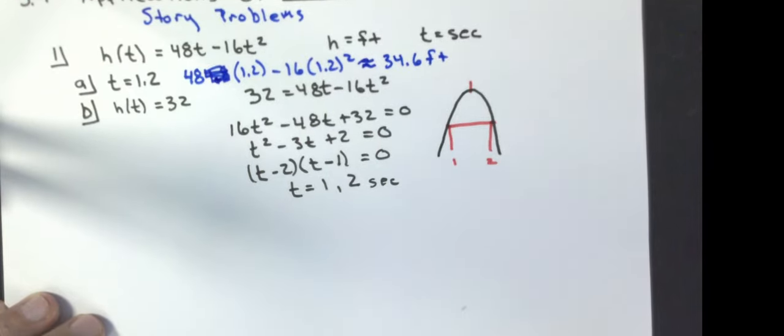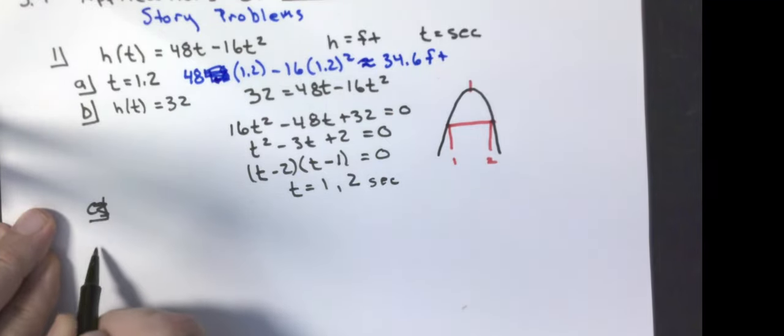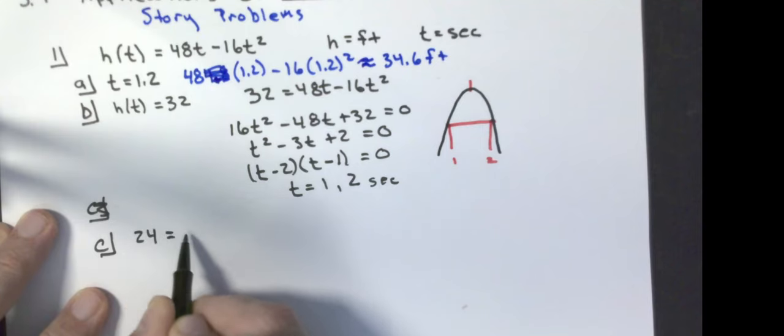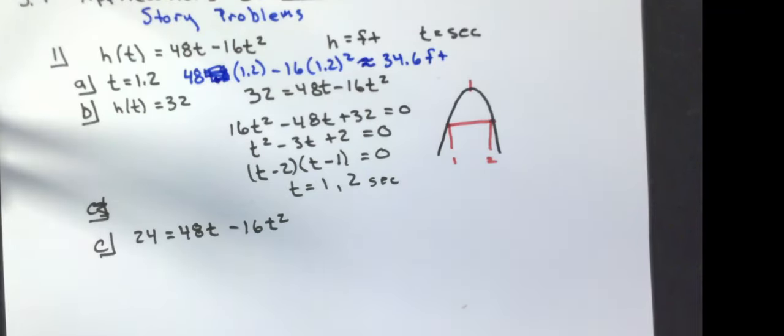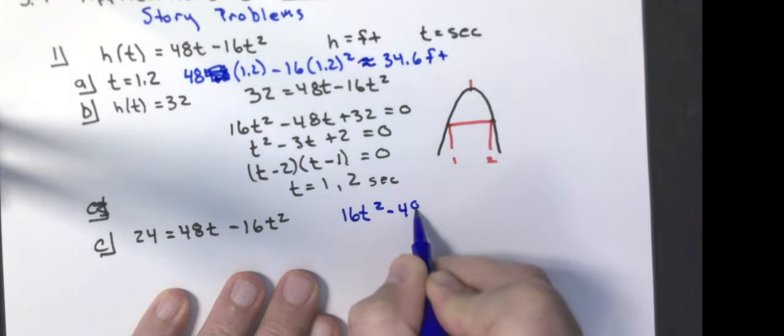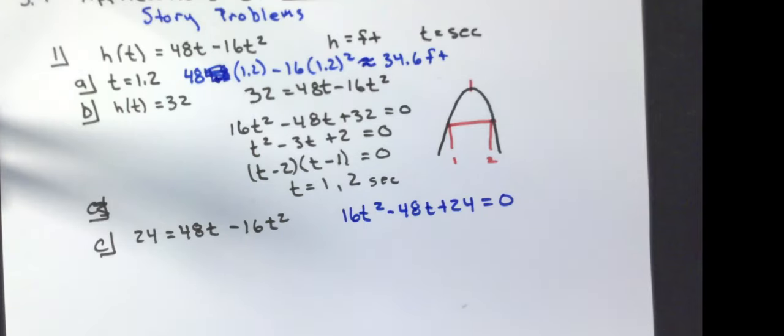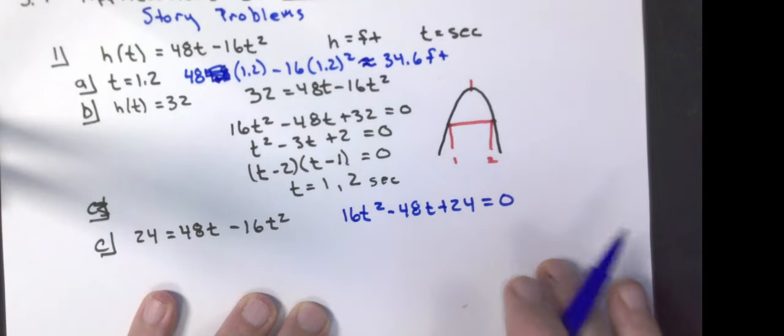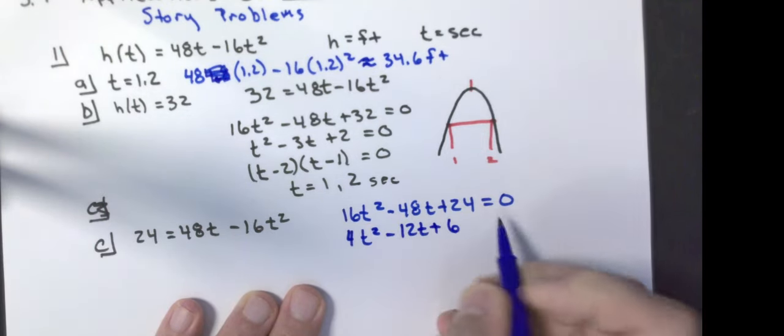Part c, when will the height be 24 feet? They tell me to round this one to the nearest tenth of a second. I want to know when 24 equals 48t minus 16t squared. And again, because it's a quadratic, I need to move everything to one side. I'm going to move everything to the left. I'm going to get 16t squared minus 48t plus 24 equals zero. Notice here, not everything's divisible by 16, but I see everything's divisible by 4.